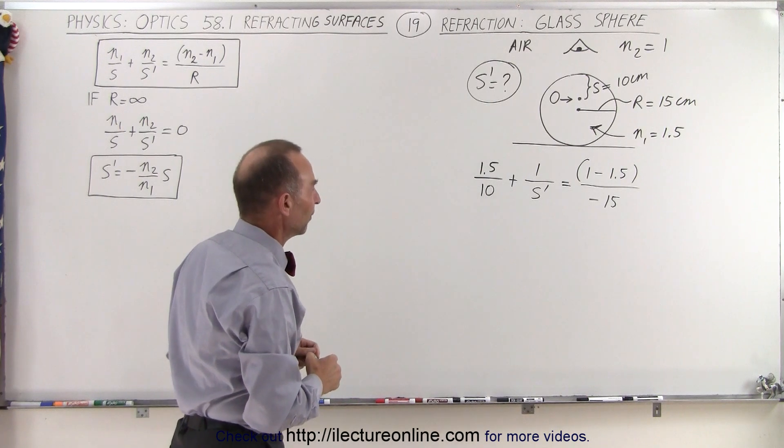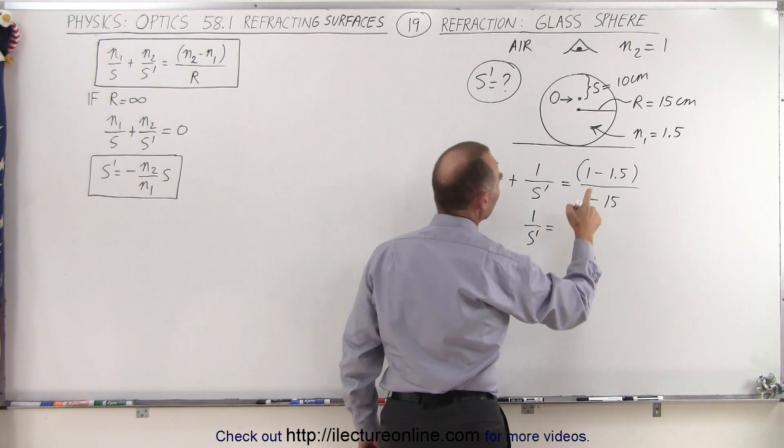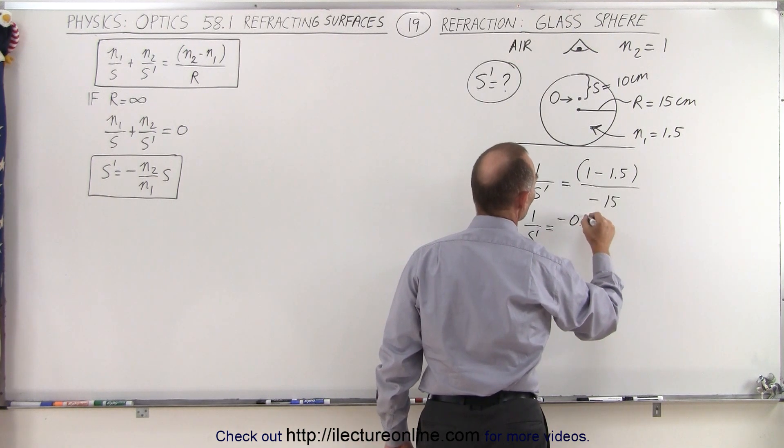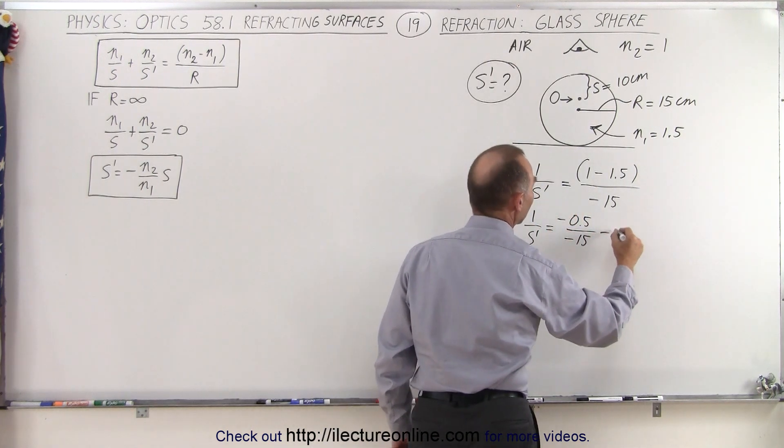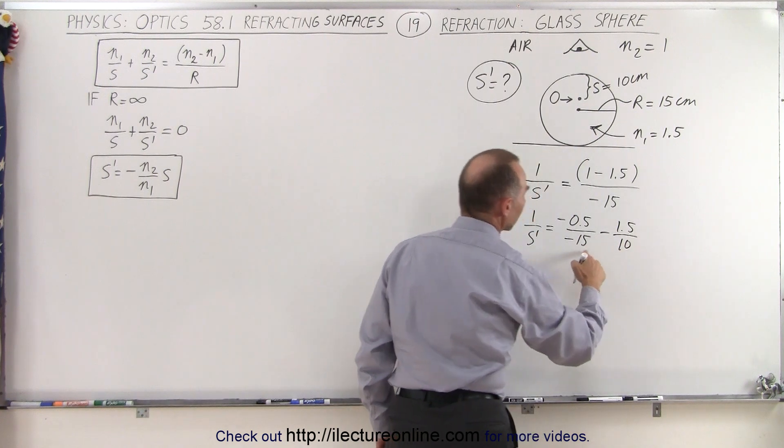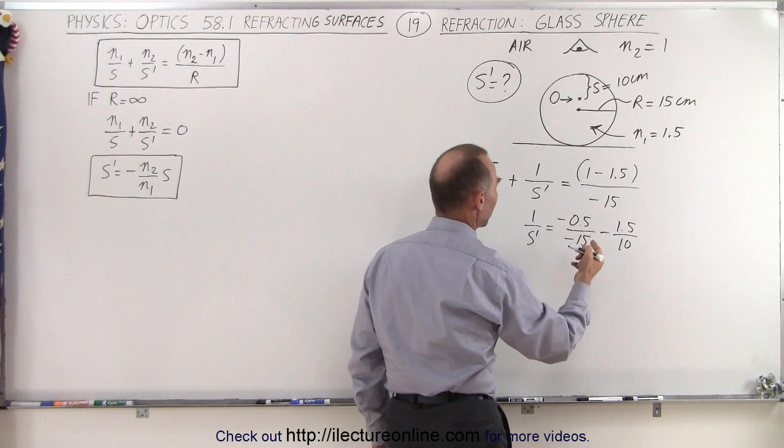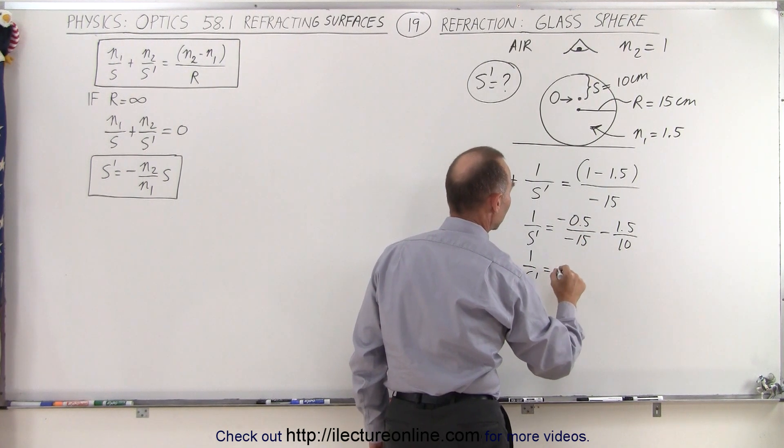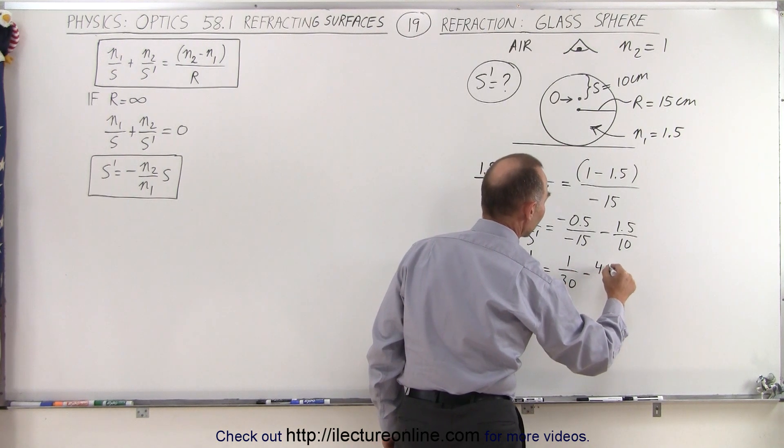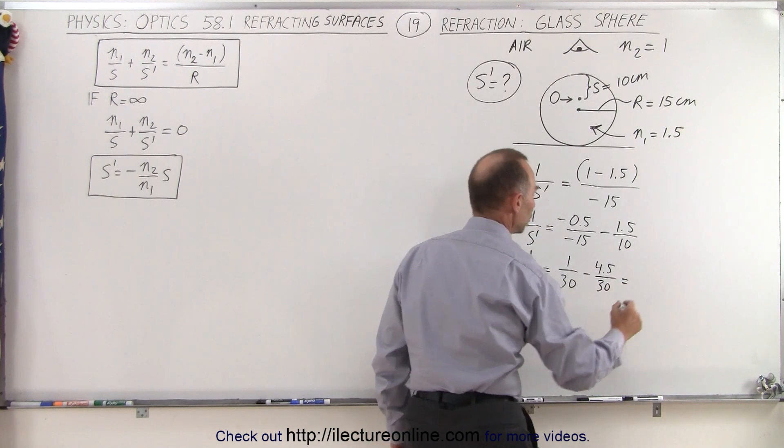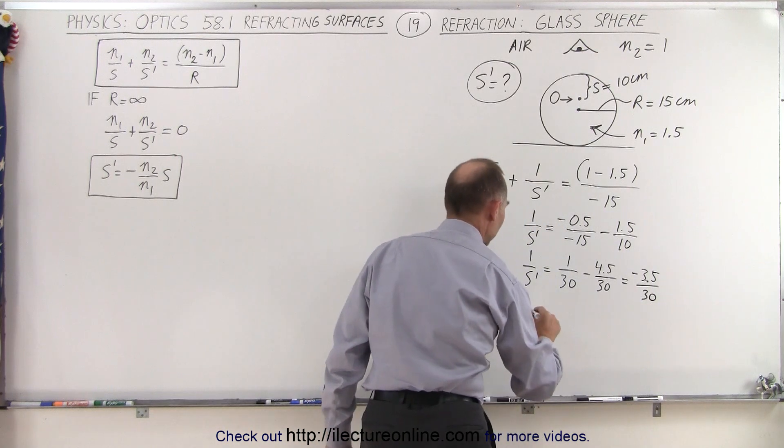Now let's look for 1 over s prime. So 1 over s prime is equal to minus 0.5 over minus 15. Moving this to the other side, we get minus 1.5 divided by 10. The common denominator here is going to be 30. Negative and negative becomes a positive, so I have 1 over s prime equals 1 over 30 minus 4.5 over 30, which equals minus 3.5 over 30. Which means that s prime is equal to the inverse of that.